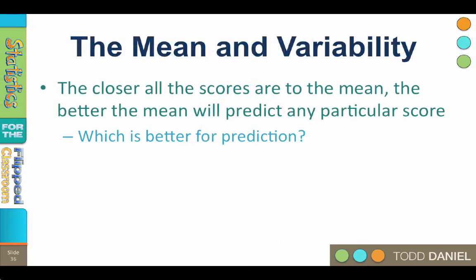Now we can observe something about the mean and variability. Obviously, the closer all of the scores in the sample are to the sample mean, the better the sample mean will predict any particular score in the sample, because the sample variability is less.